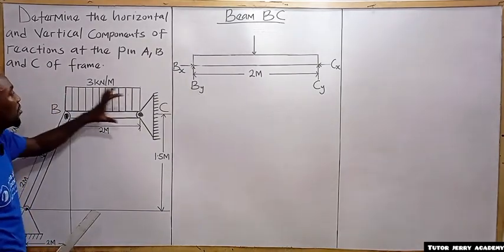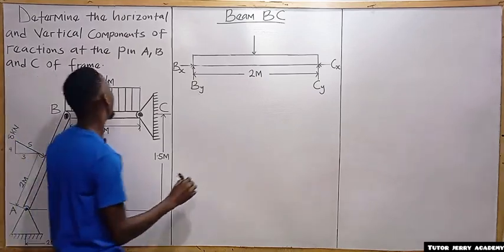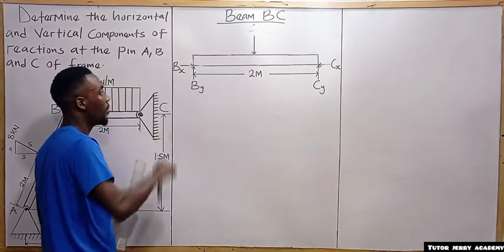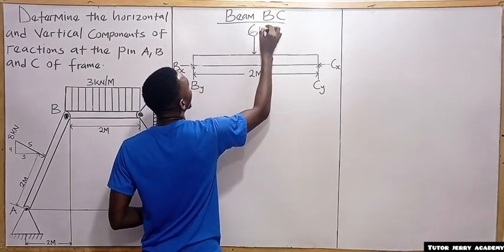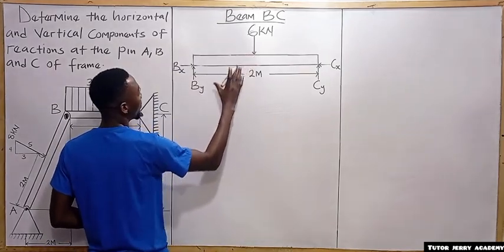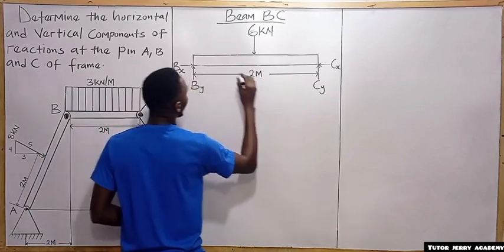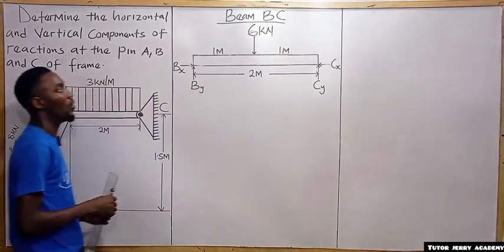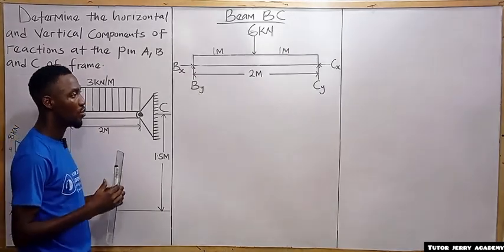We have a uniformly distributed load which we convert to a point load by multiplying 3 kN/m by the total distance of 2 m, giving us 6 kN. This resultant force acts at the center of the beam, which is 1 meter to the left and 1 meter to the right.